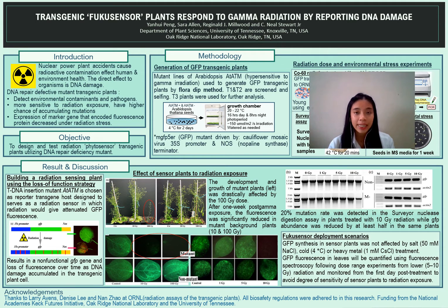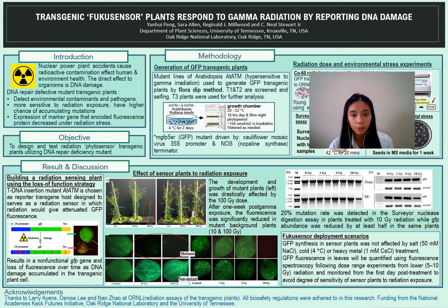For the results and discussion: under the strategy of building a radiation-sensing plant using a loss-of-function approach, a T-DNA insertion mutant ATATM was chosen as the reporter transgene host designed to serve as the radiation sensor, in which radiation would give an attenuated GFP signal. Based on this figure, we can see the loss of signal over time as DNA damage accumulated in transgenic plant cells. This figure shows that the developmental growth of the mutant plant was practically affected by the 100 Gray gamma dose. After one week post-gamma exposure, fluorescence was significantly reduced in the mutant background plant.